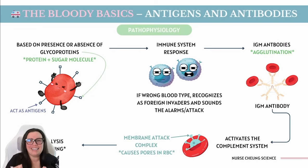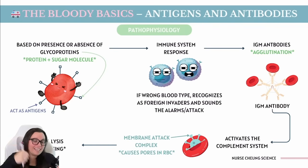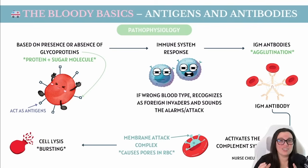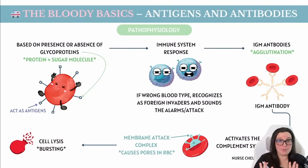These IgM antibodies are also going to activate something known as the complement system. This system is made up of special forces squads of proteins that form a membrane attack complex. They start punching holes into the donor red blood cells' membranes, ultimately causing those red blood cells to burst — hopefully preventing any kind of incompatibility errors from occurring.